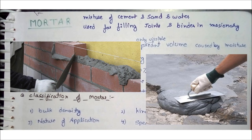In this session on building materials, we will be talking about mortar and lime. Mortar is nothing but a mixture of cement and sand. In building material, it works as an adhesive material — it works as brick masonry, stone masonry, and also as building blocks.